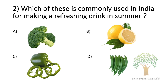Question number 2. Which of these is commonly used in India for making a refreshing drink? Option A: broccoli. Option B: lemon. Option C: capsicum. Option D: ladyfinger. The answer is Option B, lemon.